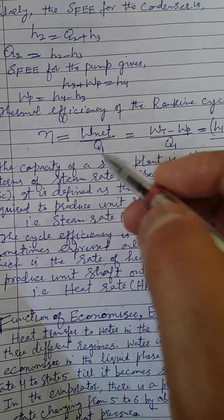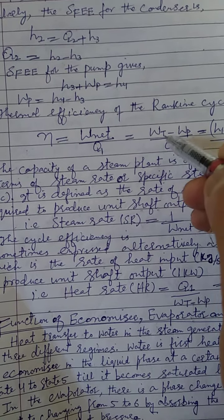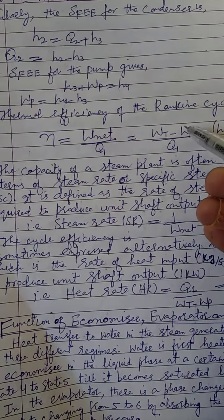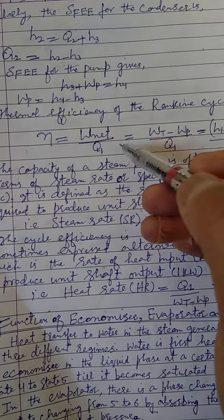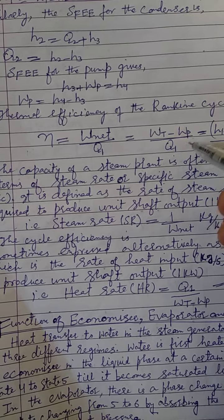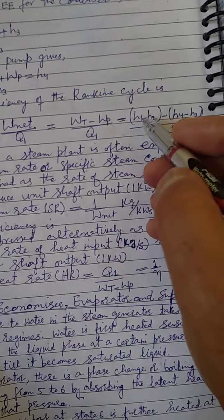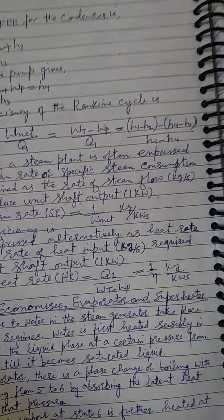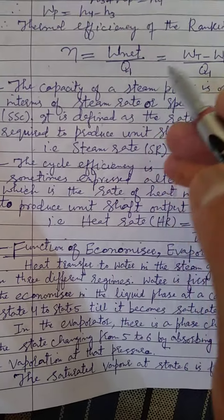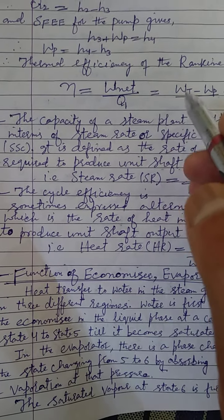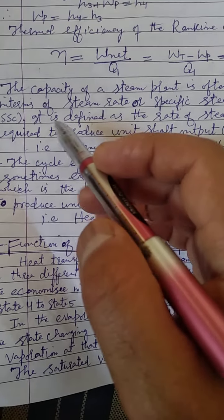The thermal efficiency of the Rankine cycle is the net work done divided by heat supplied. Net work done equals turbine work minus pump work, that is WT minus WP. Substituting: efficiency equals (H1 minus H2) minus (H4 minus H3), all divided by Q1, which is H1 minus H4. This is the final equation for the thermal efficiency of the Rankine cycle.